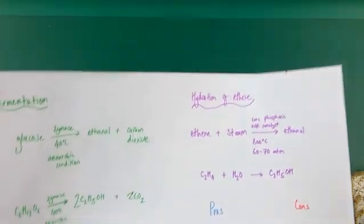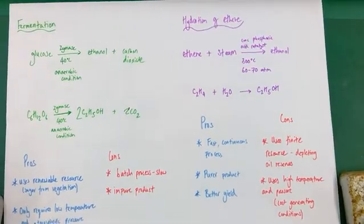What are the goods and bads of this process? The pros are that it's fast. It's a continuous process happening 24-7. You form a purer product, just ethanol is produced by this reaction, and you get a good yield, much better than the previous yield from fermentation.